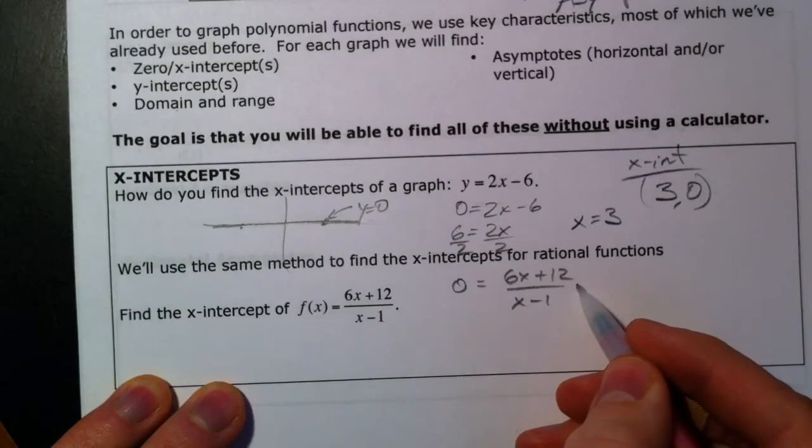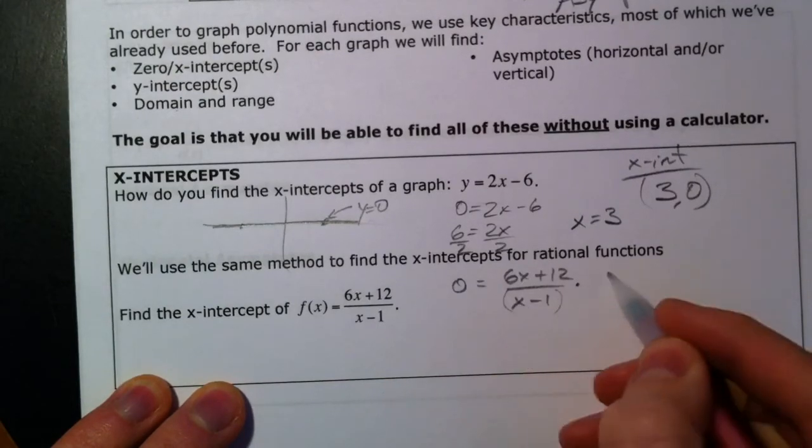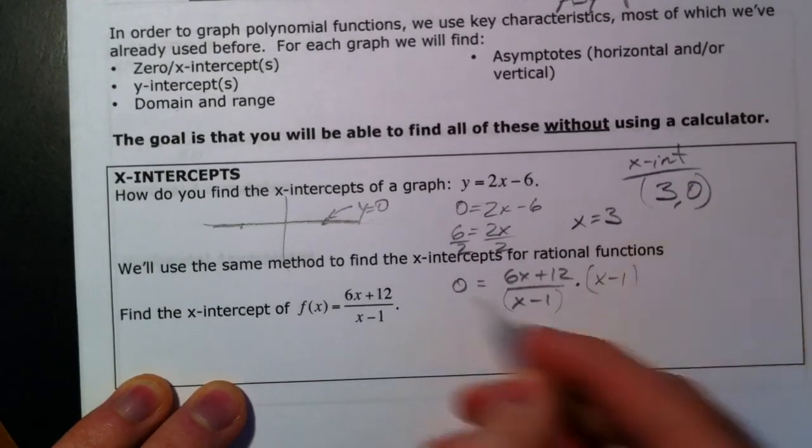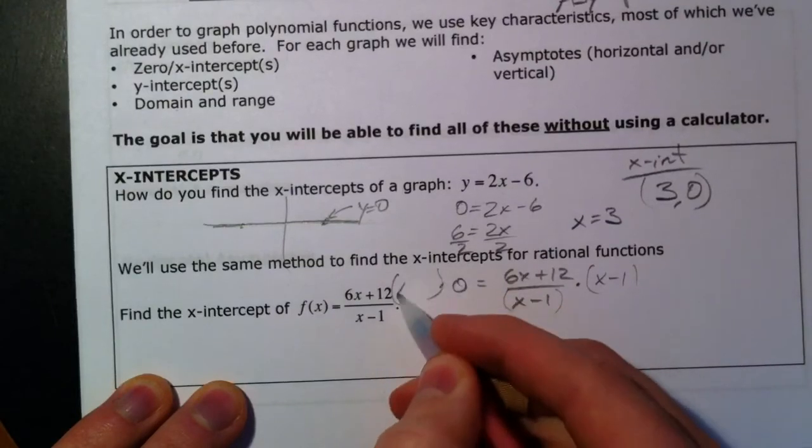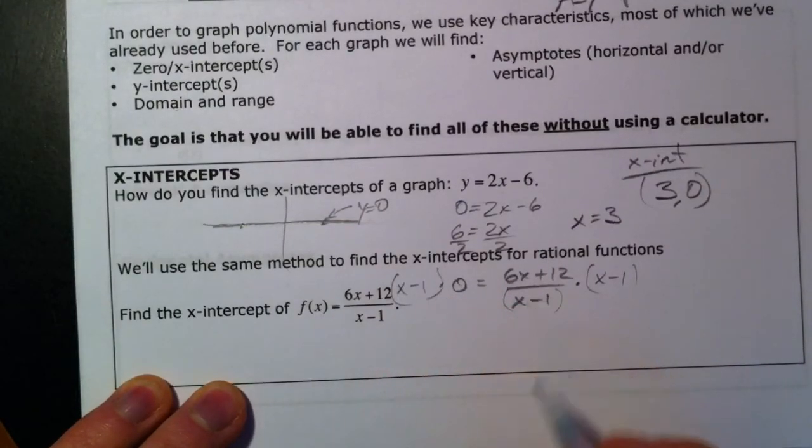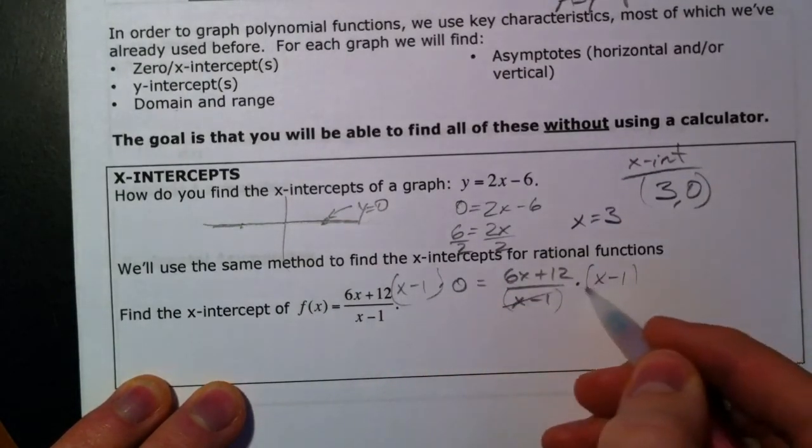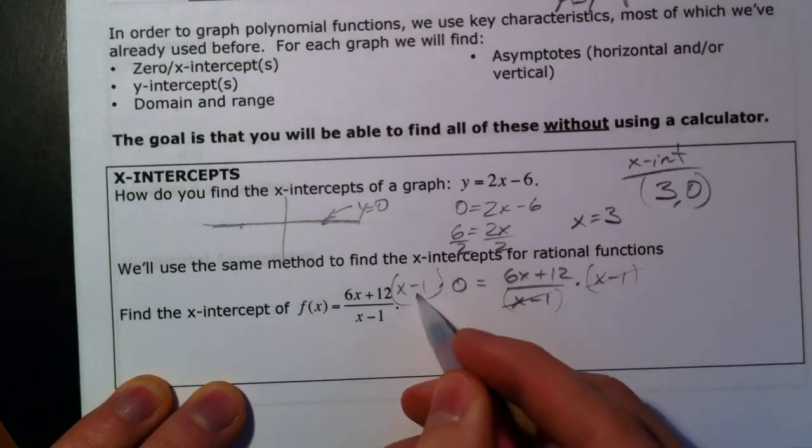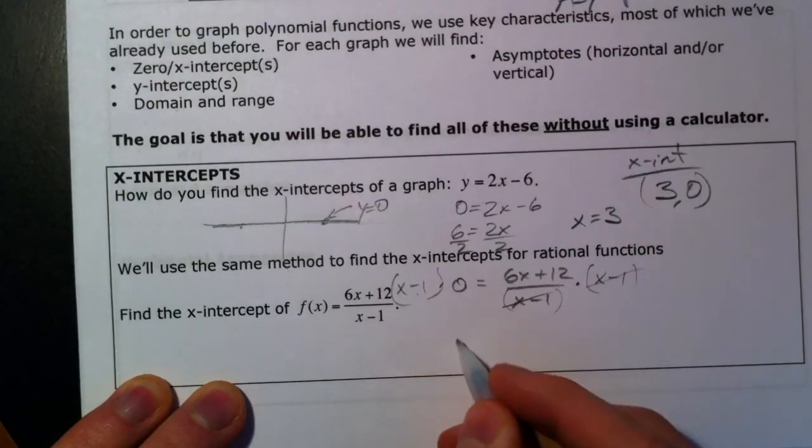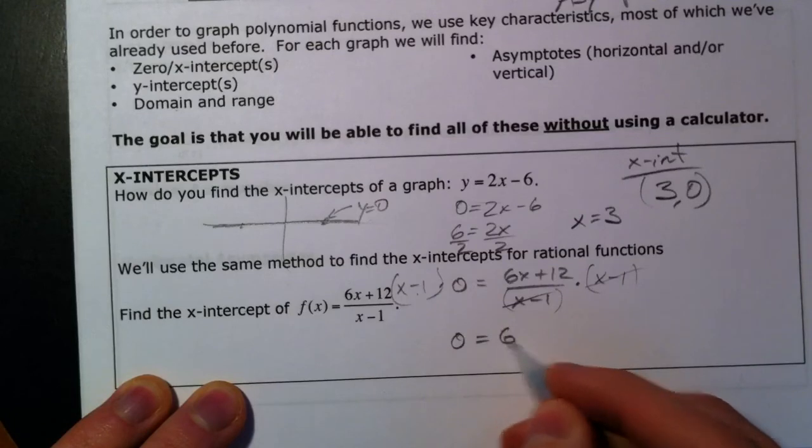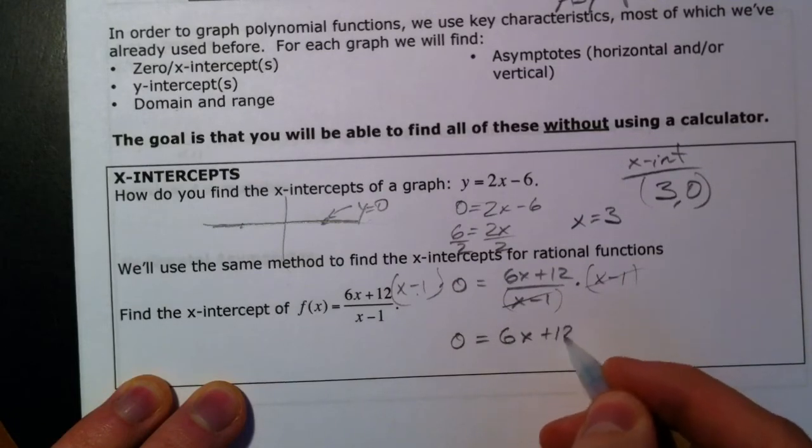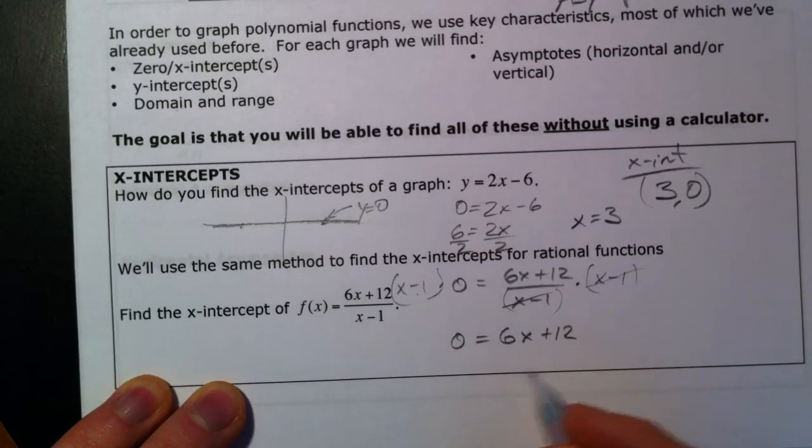Now, if we multiply both sides by x minus 1 to cancel out the x minus 1 on the bottom, 0 times x minus 1, 0 times anything is still going to give you 0. You get 0 equals 6x plus 12.